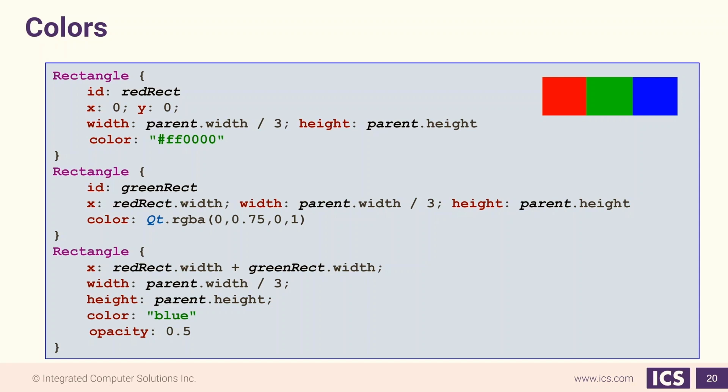All items in QML also have an opacity property that takes a value between 0 and 1.0, and this will let us define how opaque the item is.